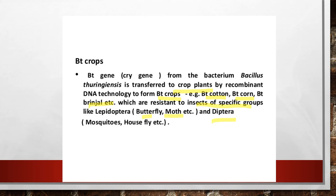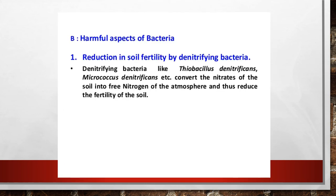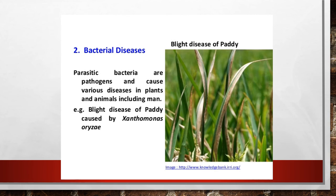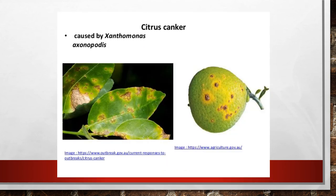Now let's look at the harmful effects of bacteria. First, the reduction of soil fertility by denitrifying bacteria: bacteria like Thiobacillus denitrificans and Micrococcus denitrificans convert the nitrates of the soil into free nitrogen of the atmosphere, thus reducing soil fertility. Some bacteria also cause plant diseases, such as blight disease of paddy caused by Xanthomonas oryzae, and citrus canker caused by Xanthomonas.